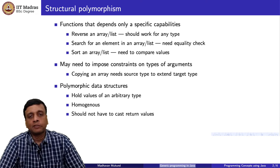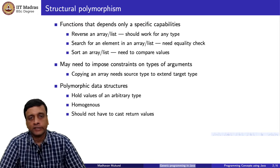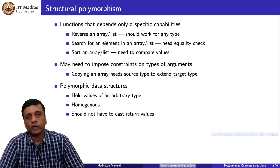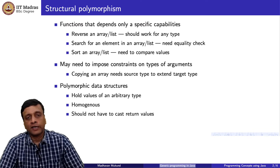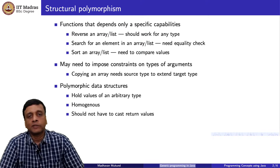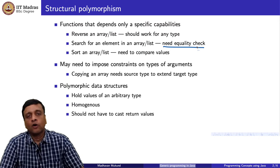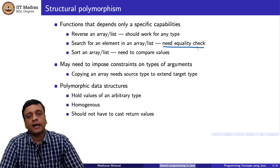It could be something which requires no capabilities at all, like reversing a list where we do not care what the objects are — we just want to change their positions, move some cartons around without looking inside. It could be searching for an element, in which case I need to check whether two objects are the same, so I need an equality check. Or it could be sorting, in which case I need to compare their values.